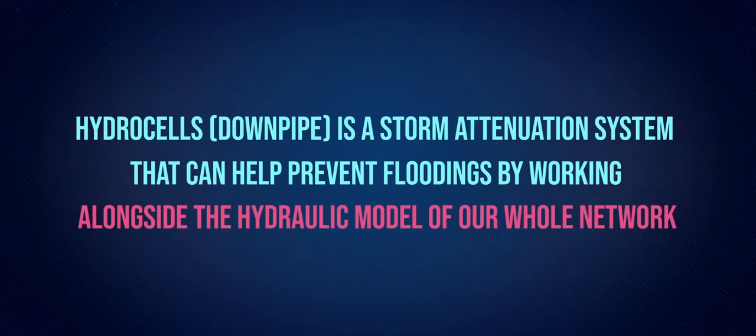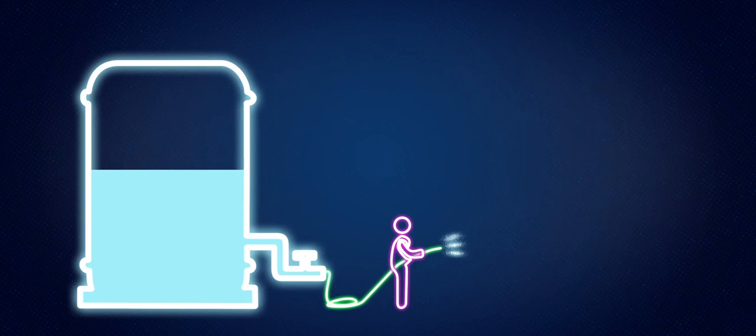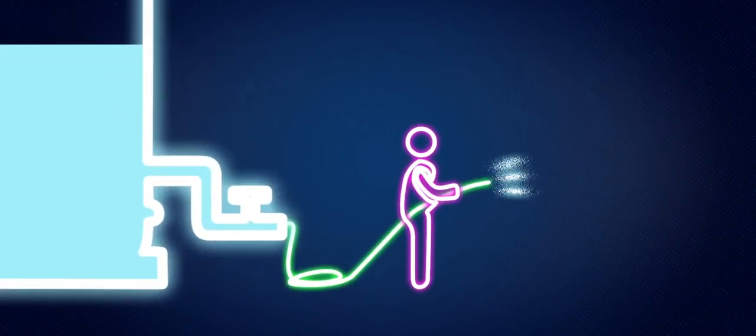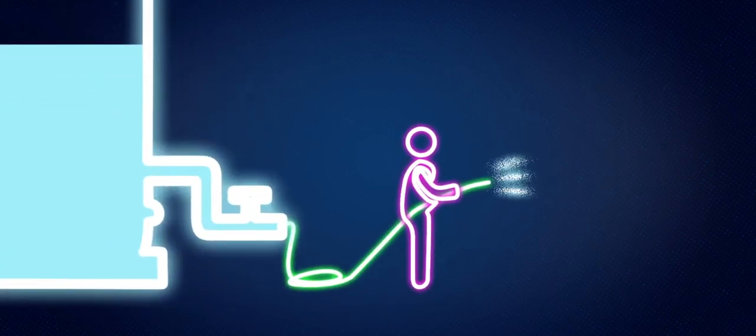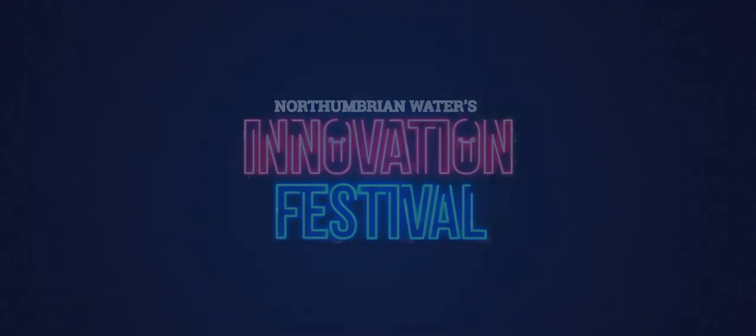Hydrocells is a storm attenuation system that can help prevent flooding by working alongside the hydraulic model of our whole network. Hydrocells can keep the network clean and efficient, allowing customers to harvest water and use it under pressure. Hydrocells can save many pounds on the customer's water bill. Hydrocells is the smartest water storage solution since the cloud.